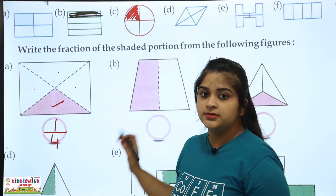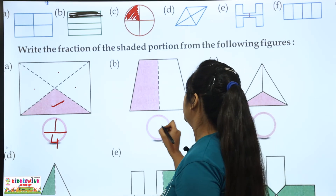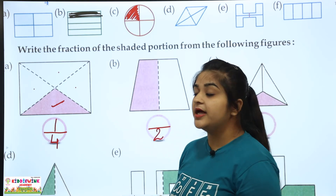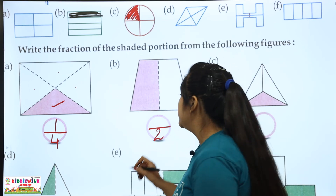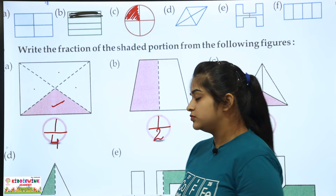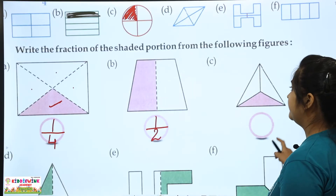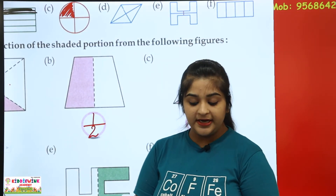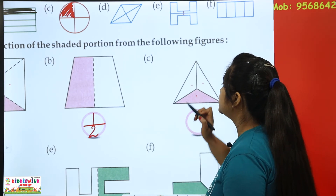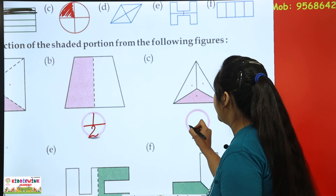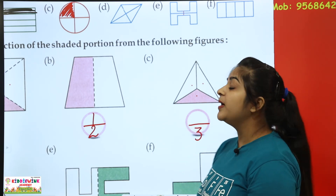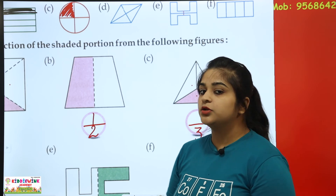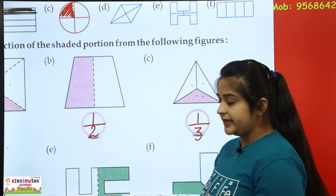Next figure: how many parts are divided? Two parts. So we write total down as two. Now the shaded part — one or two are shaded? Two are shaded, so we write two upon two. Now C: how many parts divide? Three parts. Total is three. Shaded part? Only one. So one goes up — one upon three.